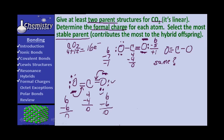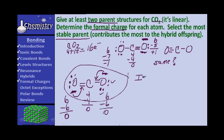This double-bond structure has all formal charges of zero — it's the best structure, the most stable, and it's the one that will contribute the most to the hybrid offspring. The other structures had formal charges of plus one and minus one, or plus one and minus one. This is all zeros. And there's a question you need to ask: is this molecule polar?